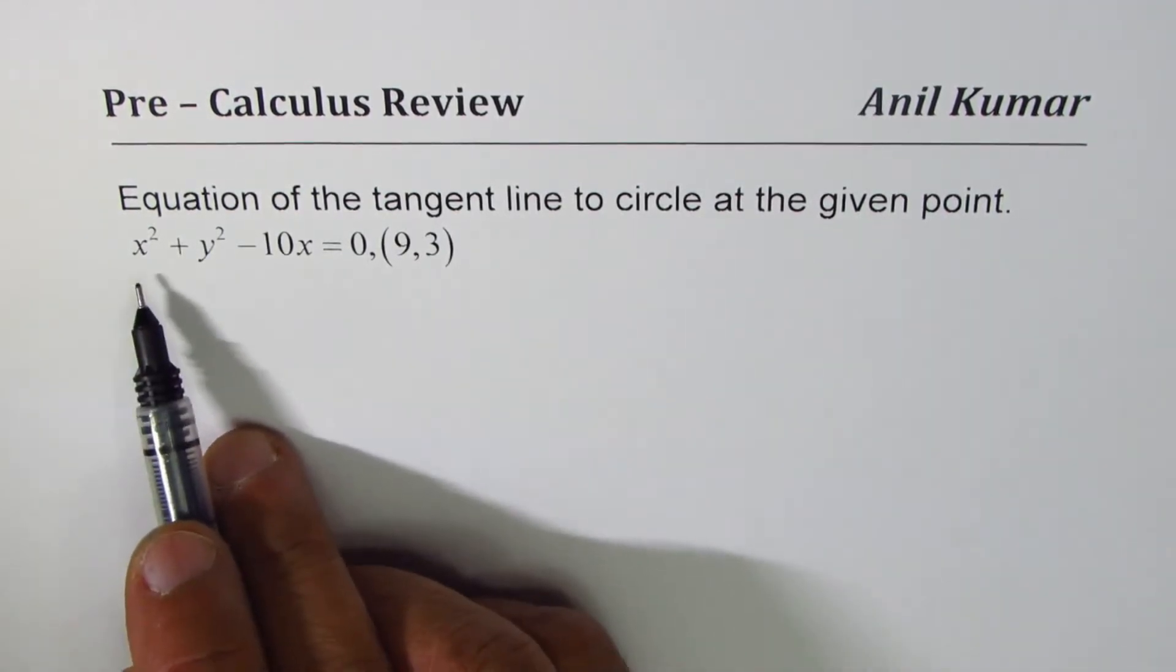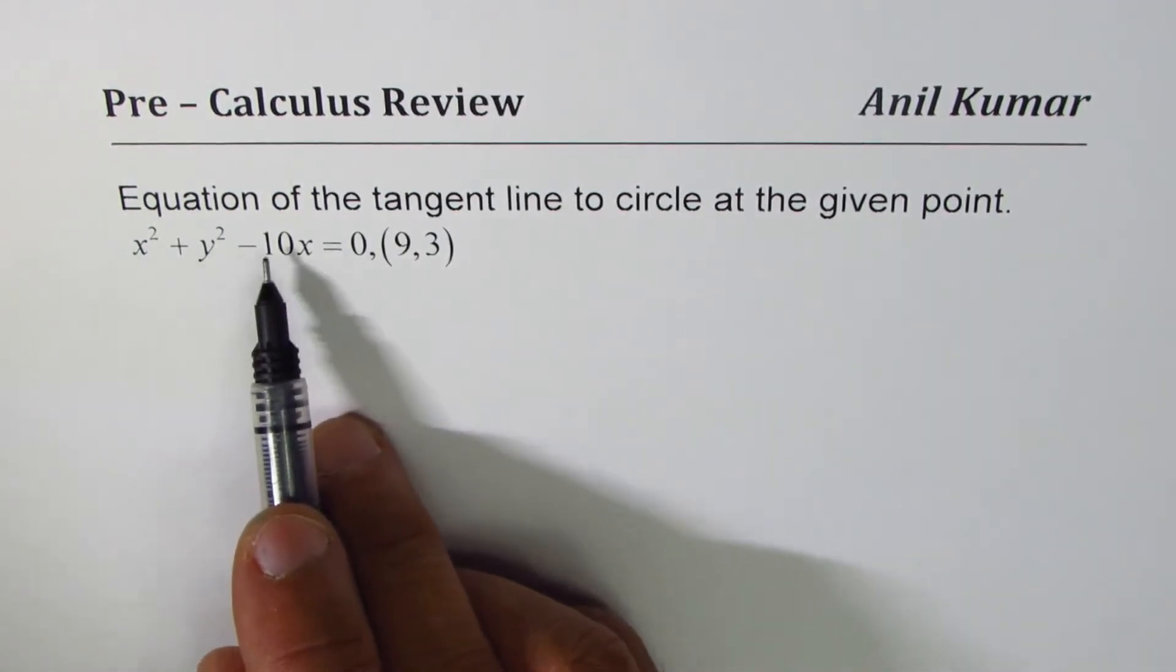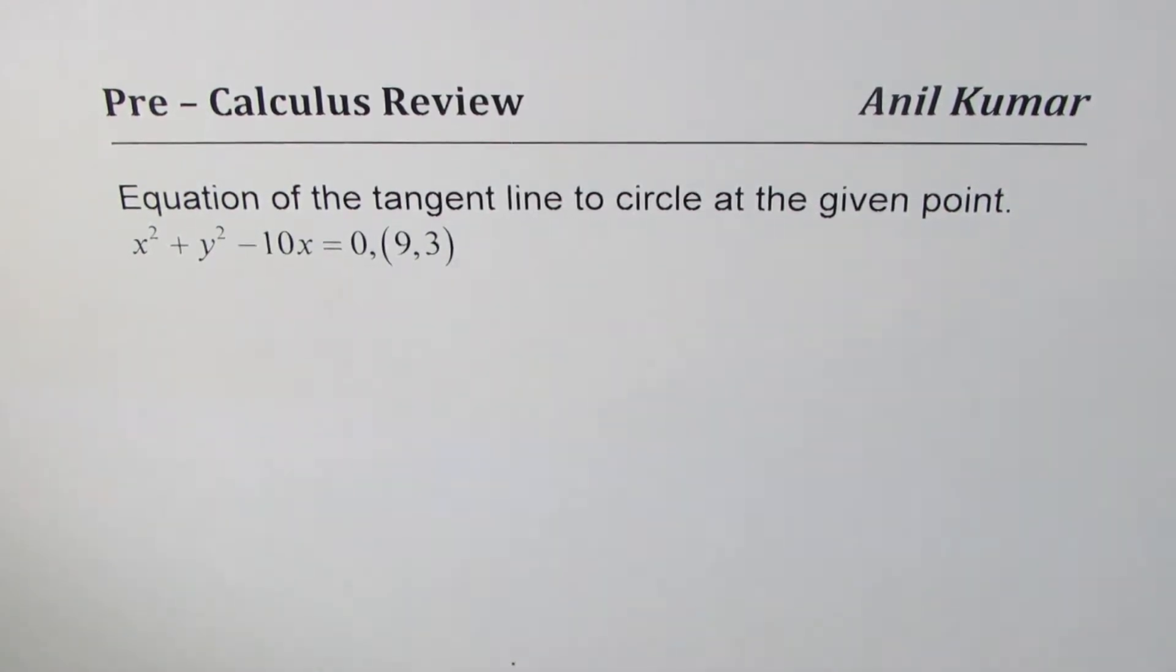The equation is given in the form x² + y² - 10x = 0. We started with four equations in this series. This is the fourth one. And I hope you've understood how to find the equation of tangent line. You can actually pause the video, answer it yourself, and then look into my suggestions.